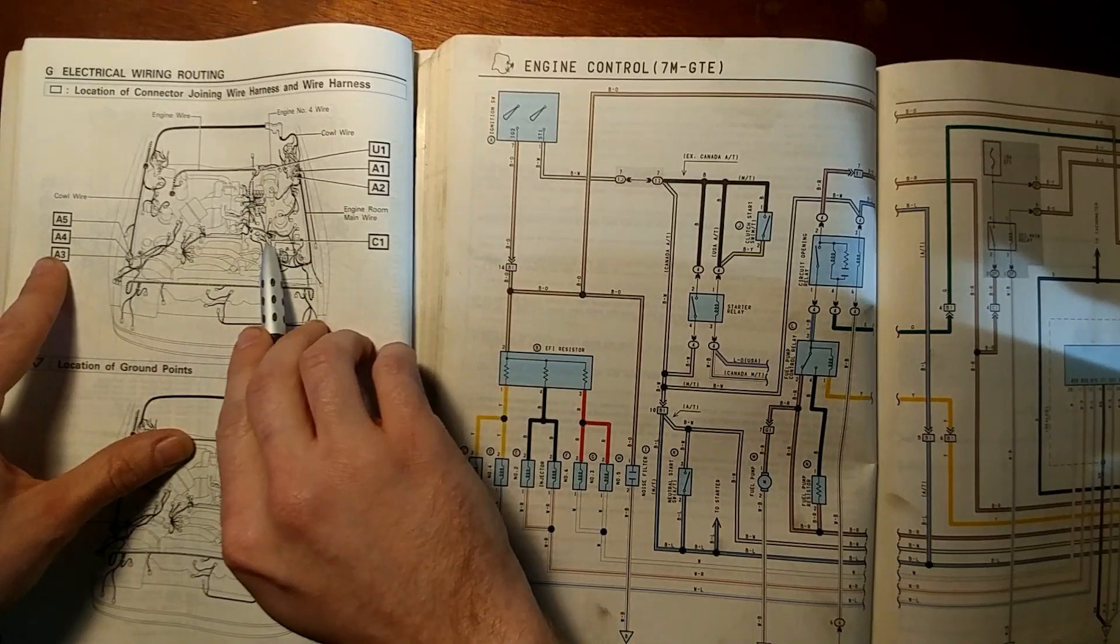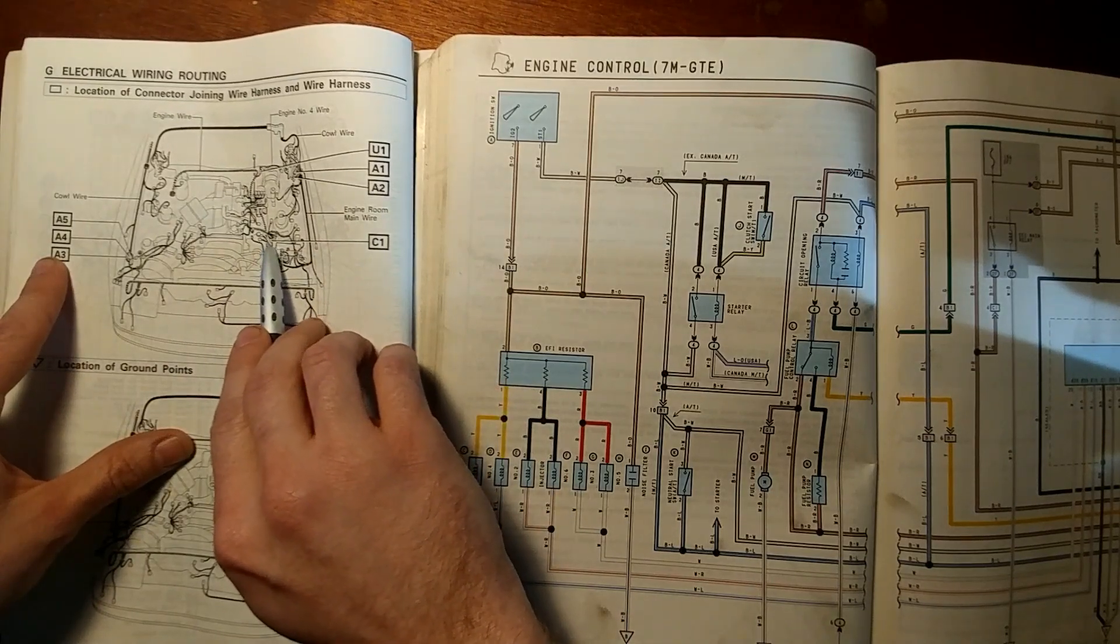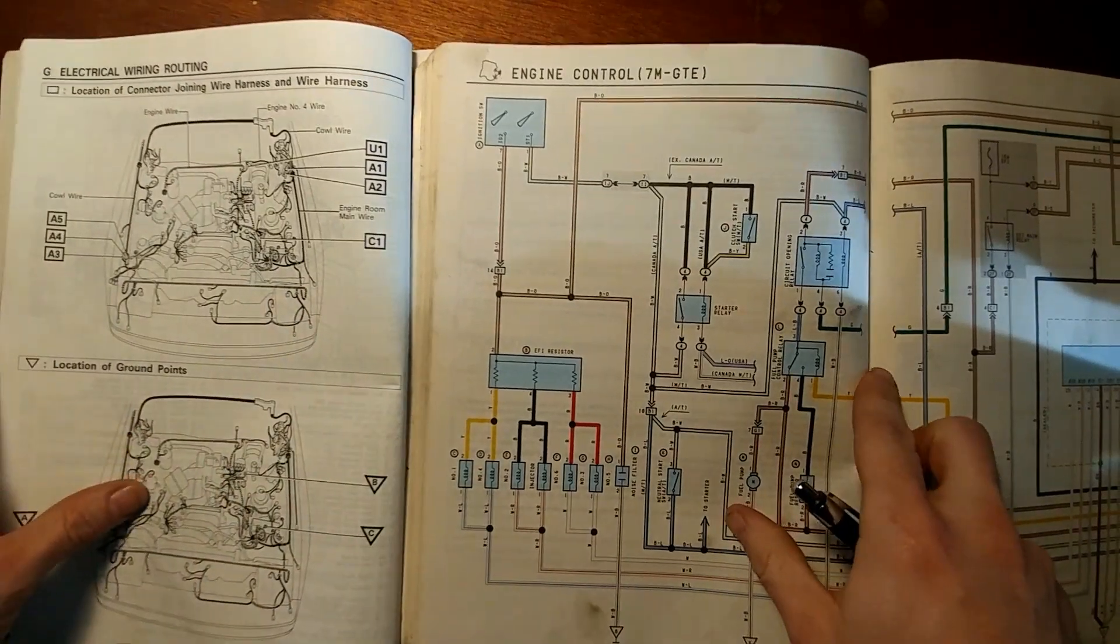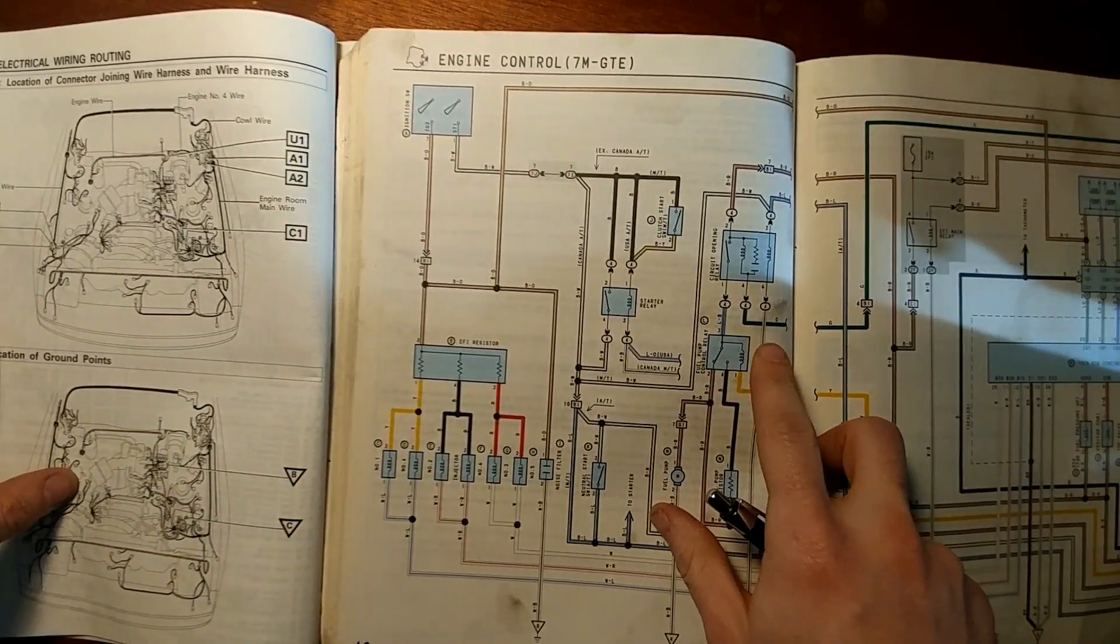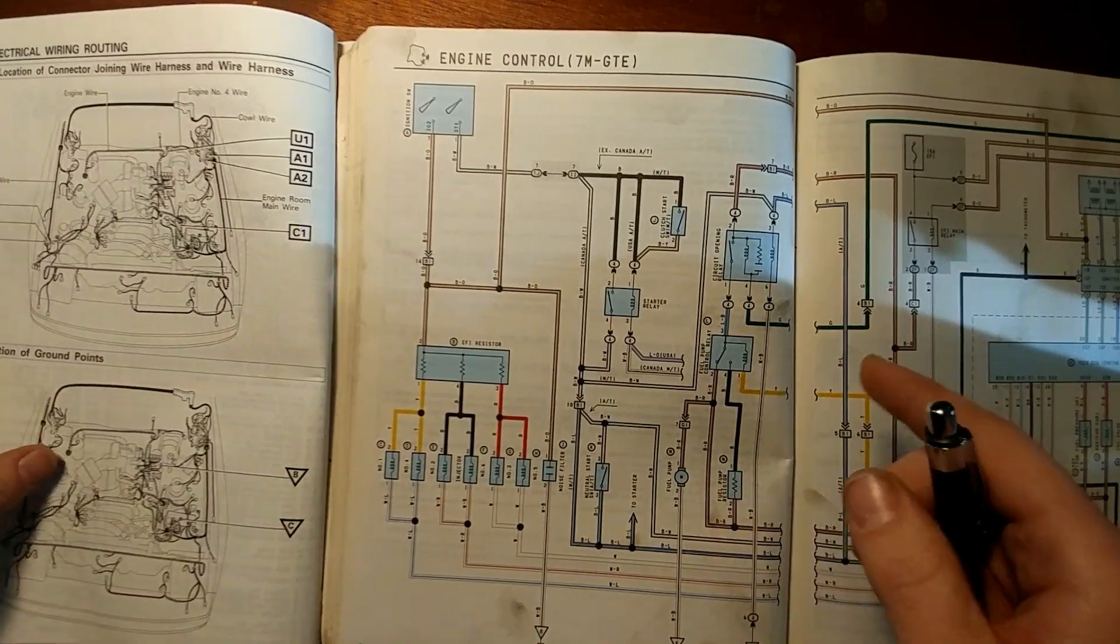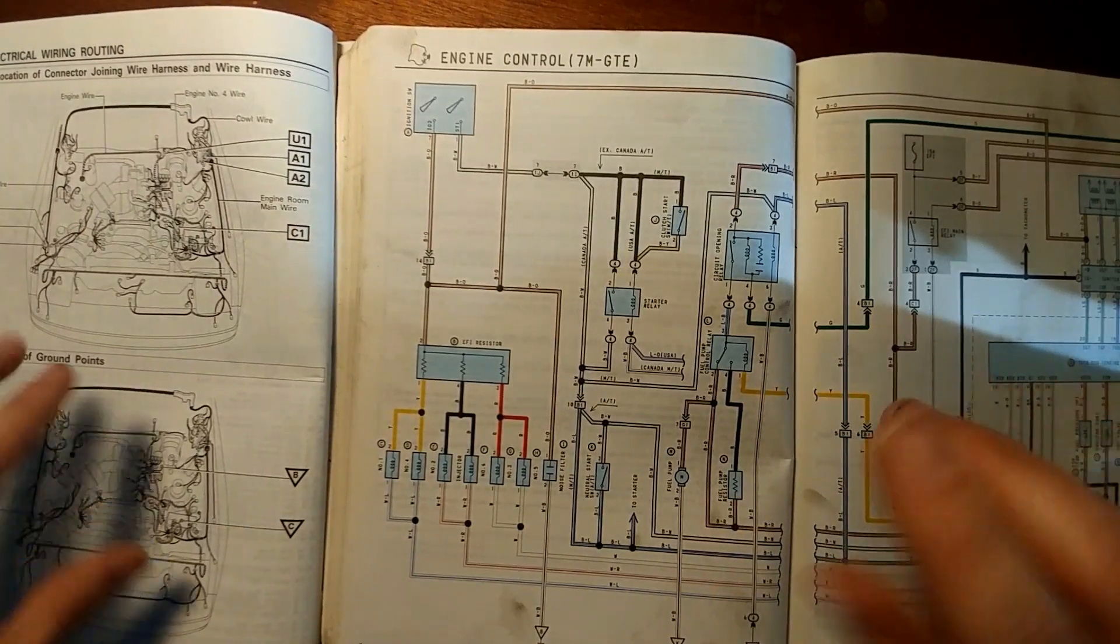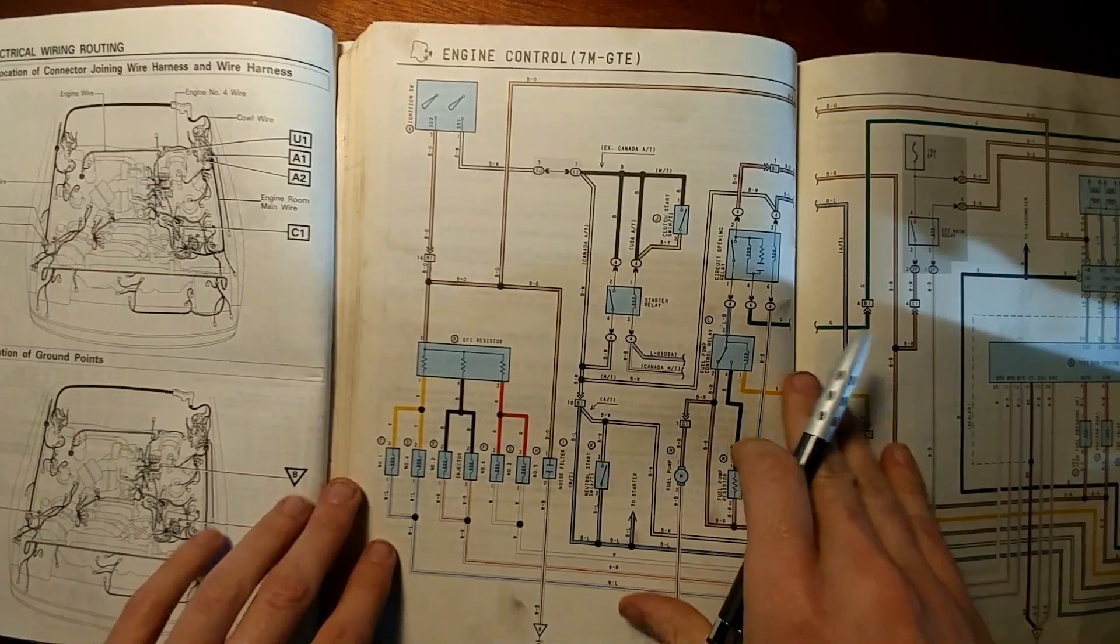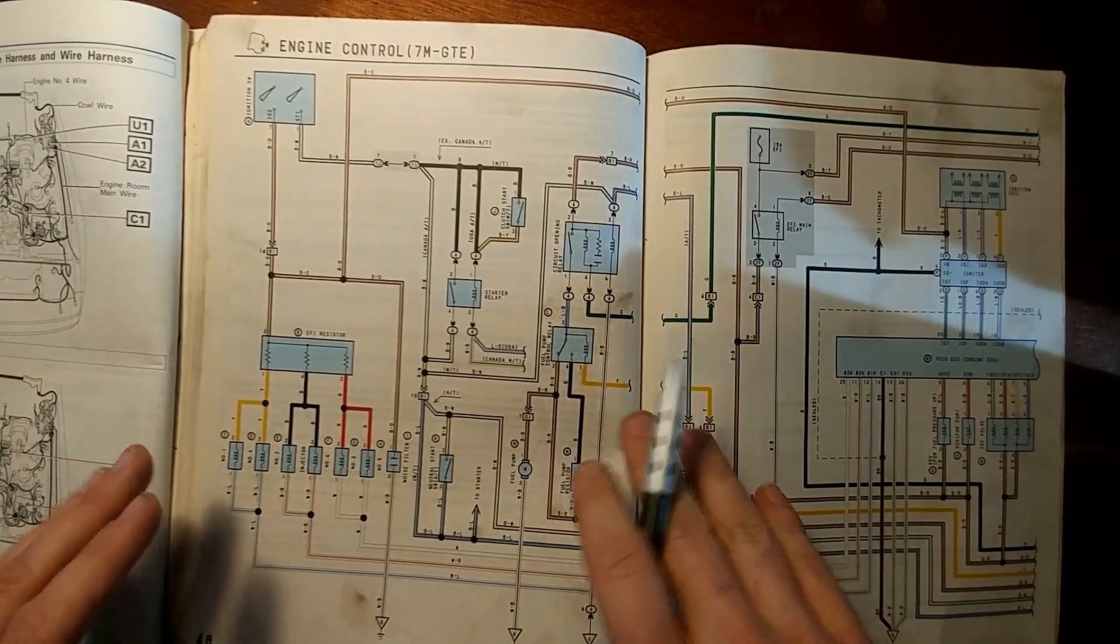On the pre-89s it's a 6 pin yellow connector and then in 89 they changed to gray, and then in 90 they changed the style of that connector, the C1 connector, and it maintained its color of gray.